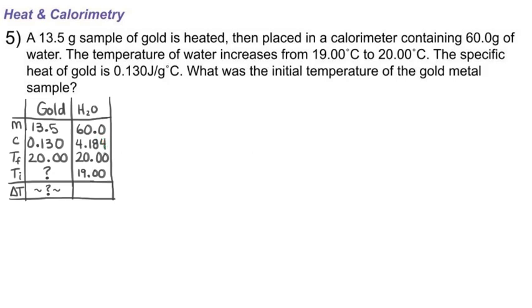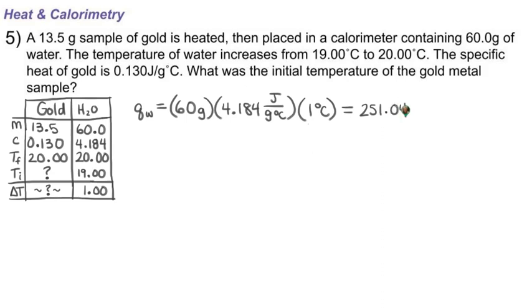So that will allow us to solve for Q of the water. 20 minus 19 gives us a temperature change of 1.00 degrees Celsius, so when we substitute into Q equals mcΔT, that value will have three significant figures. Let's start by figuring out the heat that's absorbed by the water. Q of the water equals M, 60 grams, times C, 4.184 joules per gram degree Celsius, times our Delta T of one degree Celsius. I have three, four, and three sig figs, so my answer here should be three significant figures. When I solve that I get 251.04, which rounded to three significant figures is just 251 joules.